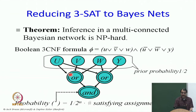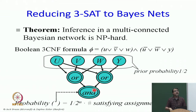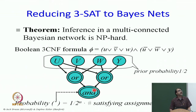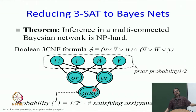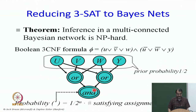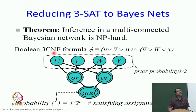Then you have an AND node which implements the AND function: if all inputs are 1, it is 1; if any of them are 0, then it is 0. So now we have given a conditional probability table for each node in the Bayes net, and we have also given the prior probabilities for each of the initial random variables.